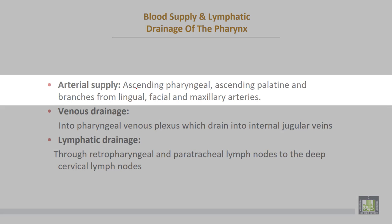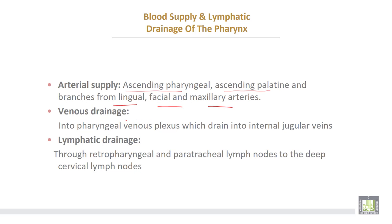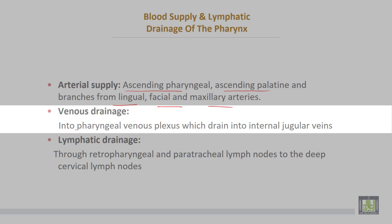The blood supply: arterial supply comes from the ascending pharyngeal, ascending palatine, and branches from the lingual, facial, and maxillary arteries. Venous drainage is via the pharyngeal veins, which drain into the internal jugular veins.